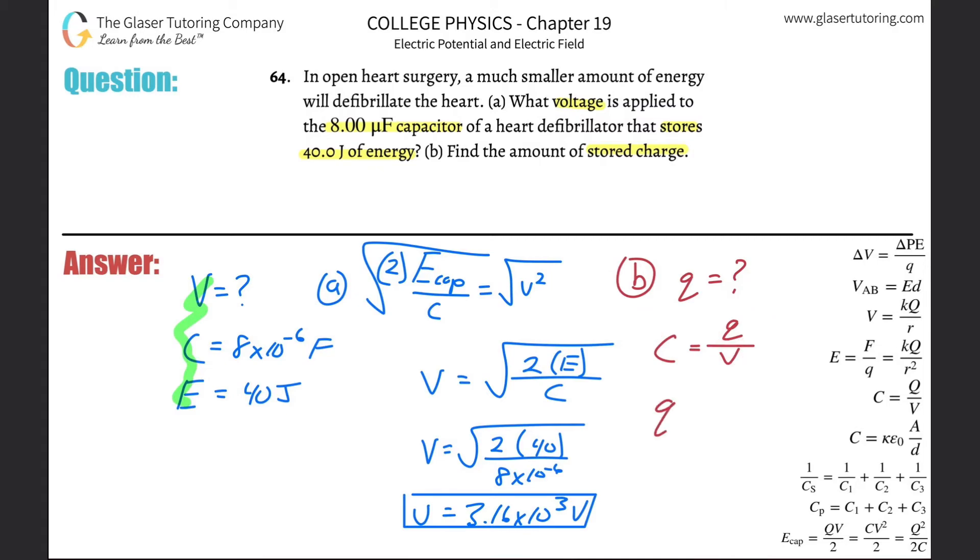So solve that bad boy for Q, right? All I got to literally do is just bring the V out of the denominator, cross multiplication. So Q is equal to C times V. And then voila. So this is 8 times 10 to the minus 6 multiplied by the voltage, which we just found, which is 3.16 times 10 to the third. I'm going to use the exact value when I do the calculation. And let's plug that in. And here we go. We get a charge value of about 0.0253.